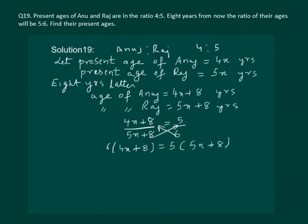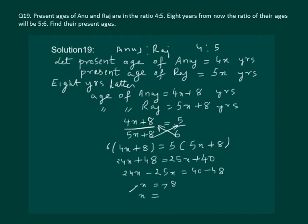Let us open the brackets. We get 24x plus 48 equal to 25x plus 40. Now let us bring the like terms together. We get 24x minus 25x equal to 40 minus 48. That means minus x equal to minus 8, which implies that x equal to 8.